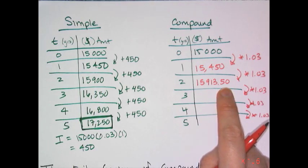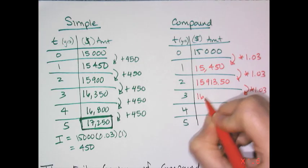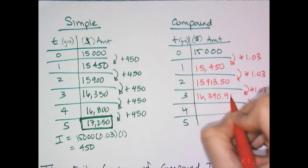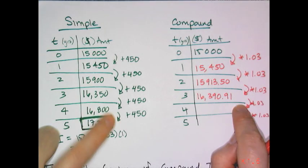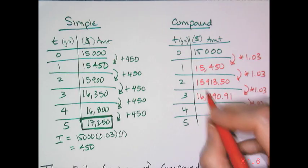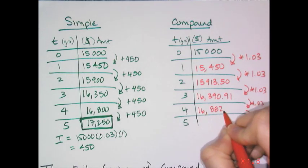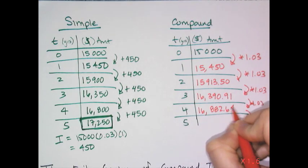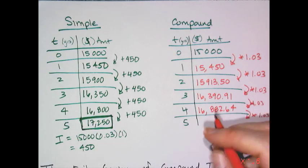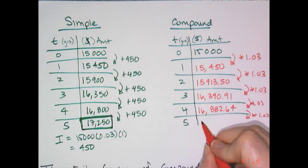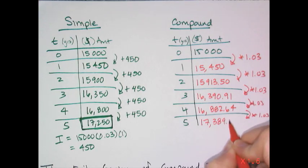Year three is $16,390.91 — about $40 more than simple interest. Year four is $16,882.64 — about $82 more. And finally year five is $17,389.12 for compound interest compared to $17,250 for simple interest.